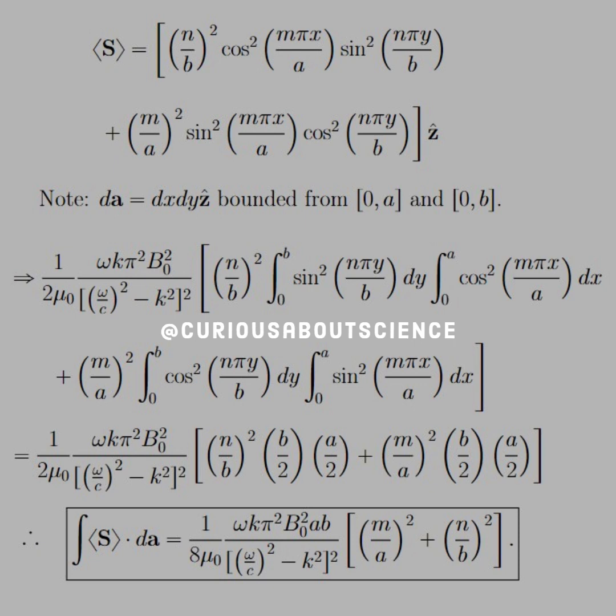Okay, so now that we can ship all these constants out front, what we see is that we have 1 over 2 mu naught for the integral's sake. We have omega K pi squared B naught squared over omega C squared minus K squared, all of that squared.